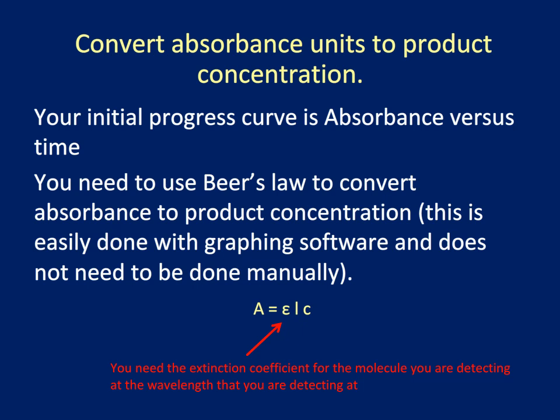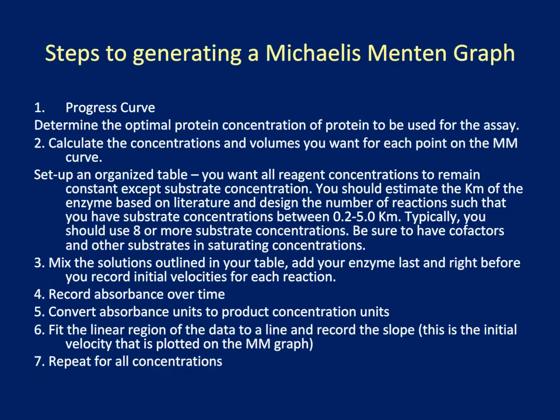For each of your progress curves, if you have the absorbance versus time in your spreadsheet, you can use the formula to convert the absorbance in one column to the product concentration in another column. Once you've converted the absorbance units to product concentration, use graphing software such as Excel or Origin to fit the data to a line. Record the slope in your spreadsheet and repeat for all substrate concentrations.